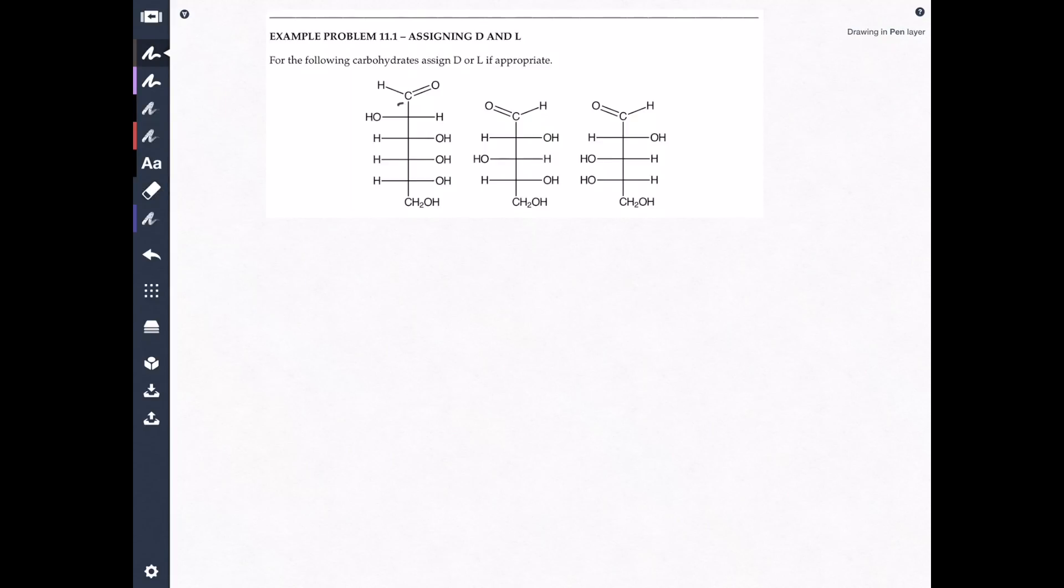Again, find the carbonyl. And then find the chiral carbon that's furthest away from it. And that's the chiral carbon that you have to examine. All right. Once you've found that chiral carbon, once you know the chiral carbon that you need to look at, what do you do?